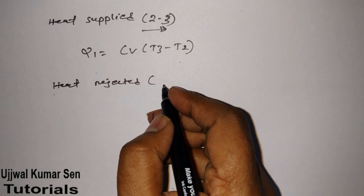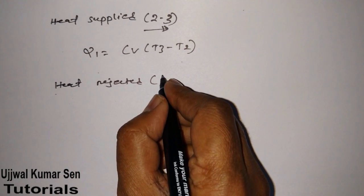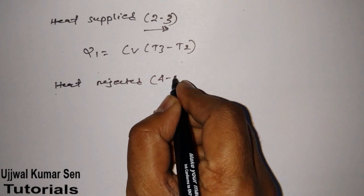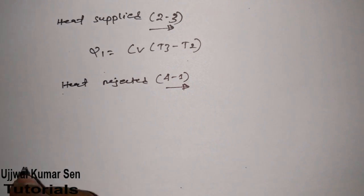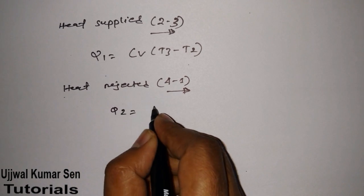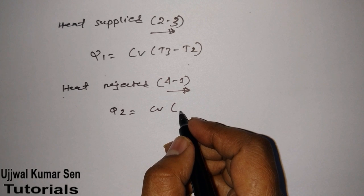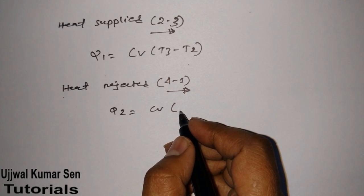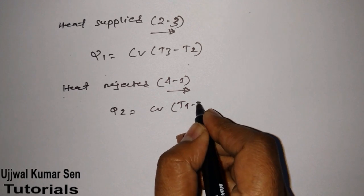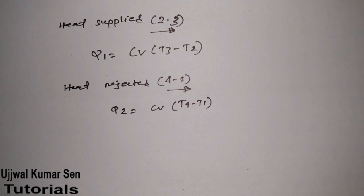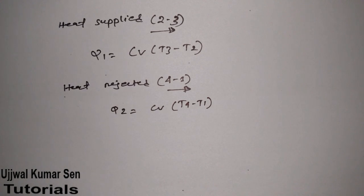For heat rejected: heat is rejected in the 4 to 1 process. Therefore we can say Q2 is equal to Cv times (T4 minus T1), as seen from the diagram.